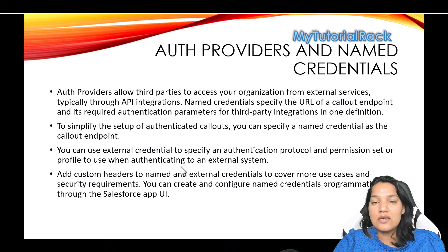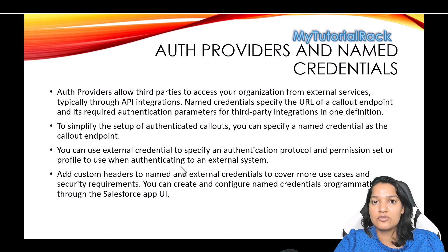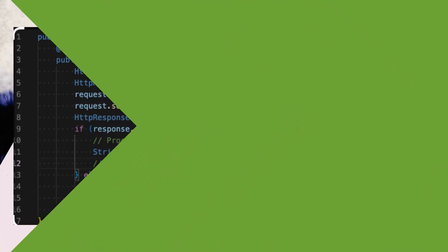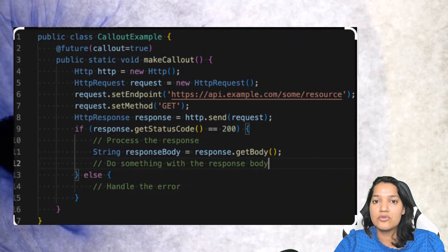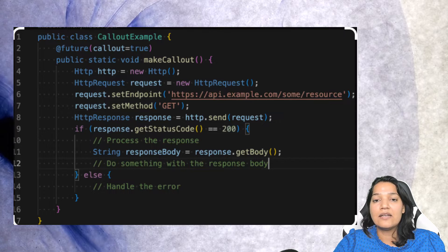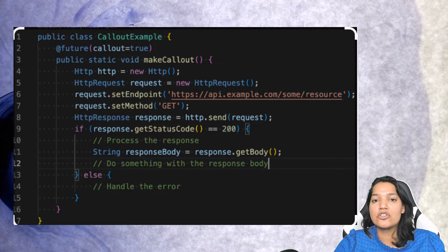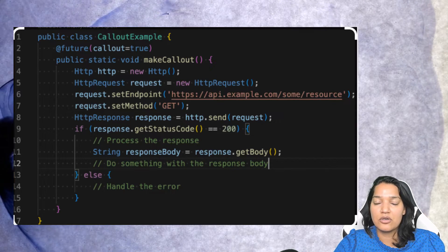Now in this section what we are trying to do is we have created another Salesforce application which is going to act as a client and it is also going to fetch the information from this external system. To do all of this via Apex code, you are going to write an Apex class and through that Apex class you are going to make an HTTP callout to that particular API.